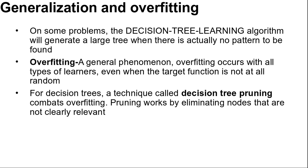Here is a question: How do we detect that a node is testing an irrelevant attribute? Suppose we are at a node consisting of p positive and n negative examples. If the attribute is irrelevant, we would expect that it would split the examples into subsets that each have roughly the same proportion of positive examples as the whole set, p/(p+n).